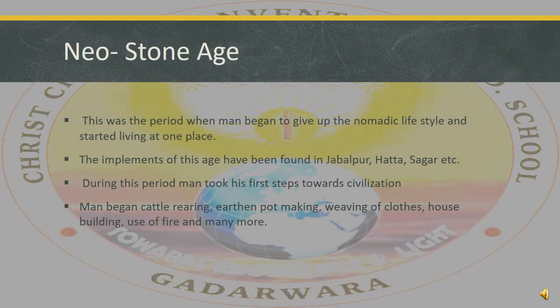The last subcategory of Stone Age is New Stone Age. This was the period when men began to give up the nomadic lifestyle and started living at one place. The implements of this age have been found in Jabalpur, Hattab, Sagar, etc. During this period, men took their first step towards civilization. Men began cattle rearing, making earthen pots, weaving of clothes, house building, use of fire, and many more.